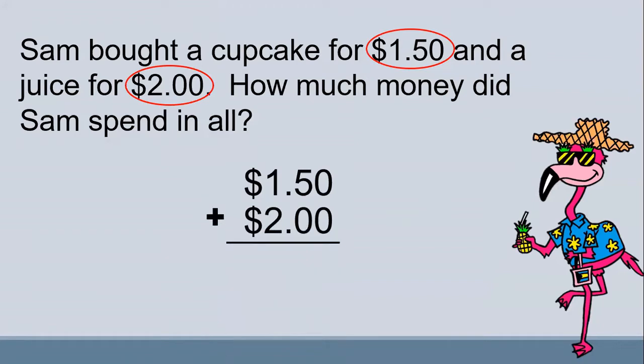Let's start from the back. 0 plus 0 equals 0. 5 plus 0 equals 5. Now don't forget to put the decimal point. 1 plus 2 equals 3.